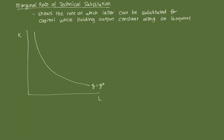Hi everyone. In this video, we're going to discuss the marginal rate of technical substitution. It's a key concept in the theory of the firm, in particular in regards to production and the relationship between our inputs, which in this case are labor and capital.